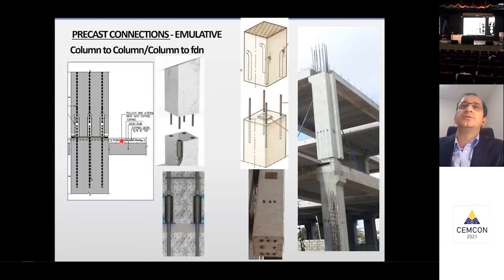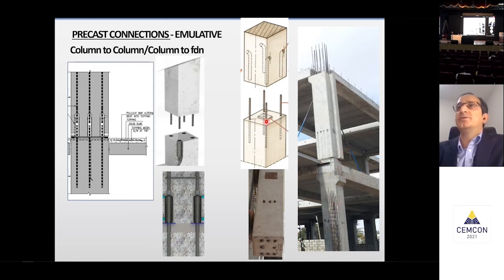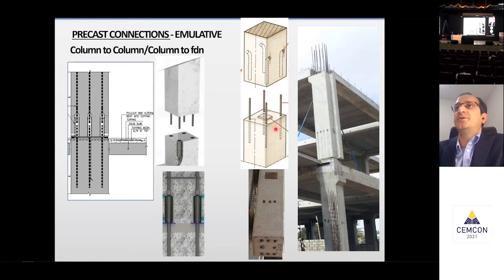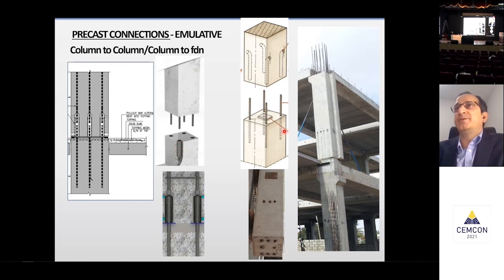For column-to-column joints, we can have reinforcement projecting up with a corrugated double tube in the upper column, working as if reinforcement is continuous like in a cast-in-situ column. We can also emulate couplers using special sleeves in precast that behave like Type 2 couplers, providing direct reinforcement-to-reinforcement continuity. In the corrugated tube case, the force transfers from rebar to the tube to the column reinforcement — behaving like a lapped joint. For tall buildings, splice sleeves are advised; for a lapped joint, a double tube connection is suitable.